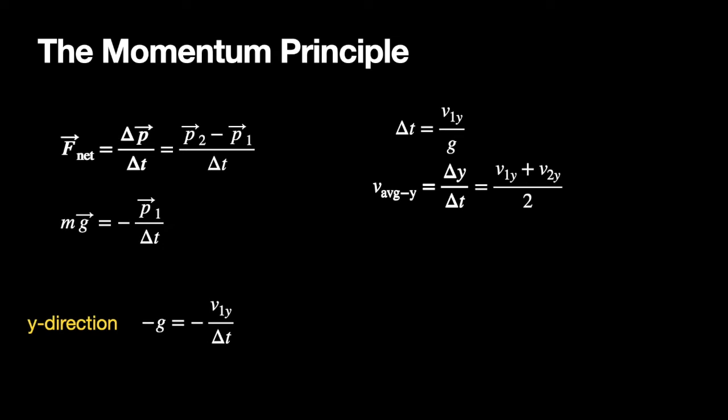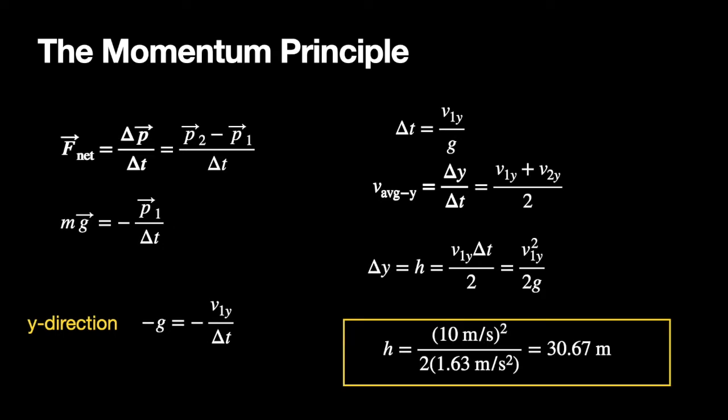So I can solve this equation, I can say delta y is h. And I can multiply both sides by delta t, and I get h equals v1y delta t over 2, because v2 is zero. And then I can substitute in my expression for delta t equals v1y over g, and I get v1y squared divided by 2g. And that's how high it goes. And so now I can plug in my values, and I get h equals 30.67 meters.